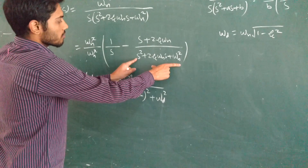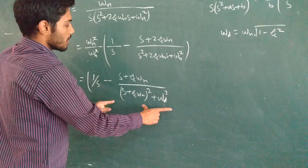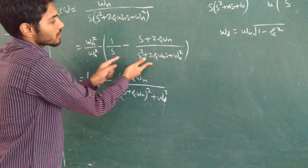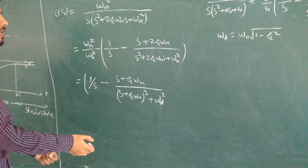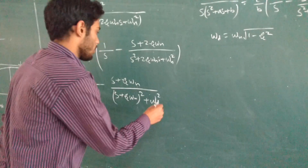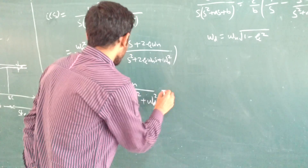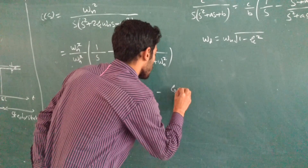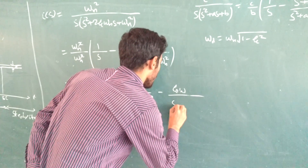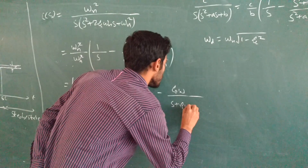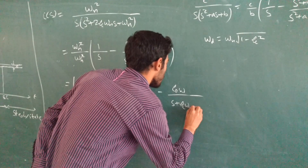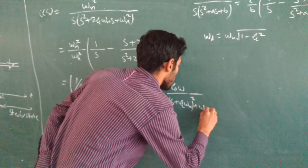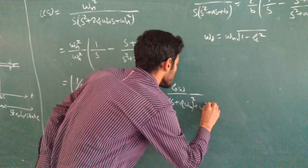We can write this term in this way. If we solve this, it will become s² + ξωn·s + ωn². We can also write this as: − ξωn / [(s + ξωn)² + ωd²].